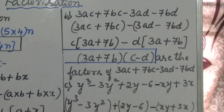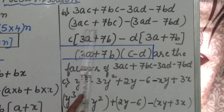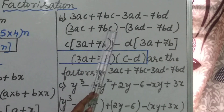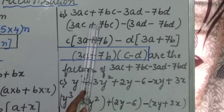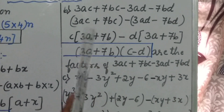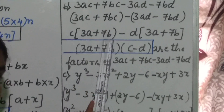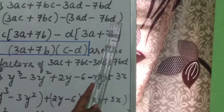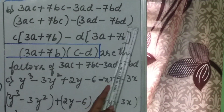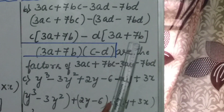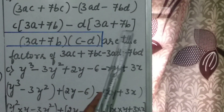In the first group, which is the common term? You see, c is there in both terms. Therefore c you take outside the bracket, and the remaining terms are 3a plus 7b. Next, minus — in the second group, which are the common terms? d is there in both, so d you take outside the bracket, and the remaining terms are 3a plus 7b.